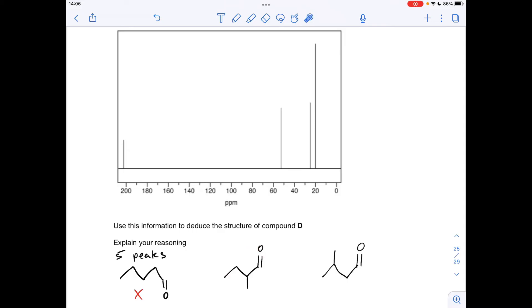So if we move on to this one now, so all I've done is taken a carbon off and put it on as a branch, as a methyl group. So this is 2-methylbutanal now. So in terms of carbon environment, one, two, three, four, five. They're all different, so we've still got five environments. We'll get five peaks in the carbon-13 NMR, so it's not this one either.